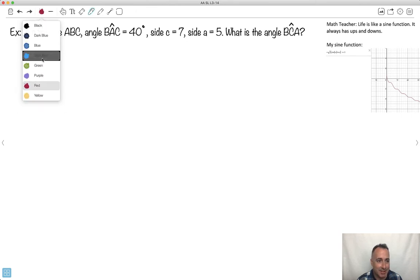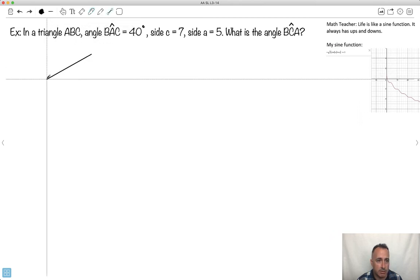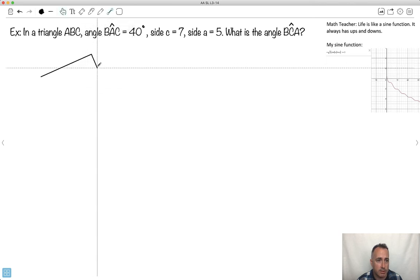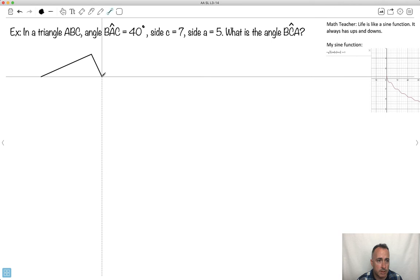Let's try to draw ourselves some sort of triangle that could satisfy this. I'll just draw a triangle. Maybe I'll do like a long end, a shorter end here like this. Let me label everything. I'll call this A, this B, this C. I know that angle BAC is 40 degrees, so that's this one, this angle right here.